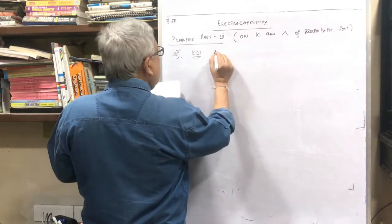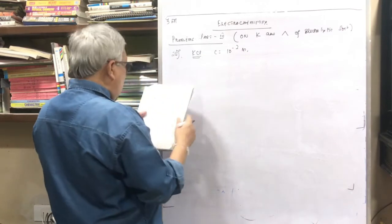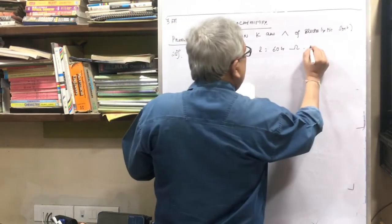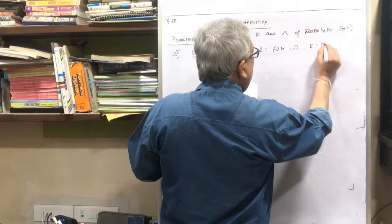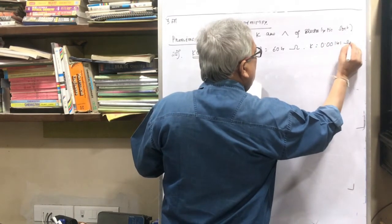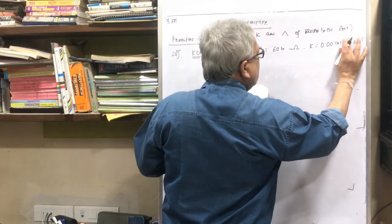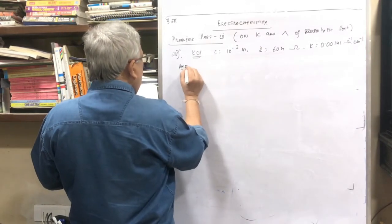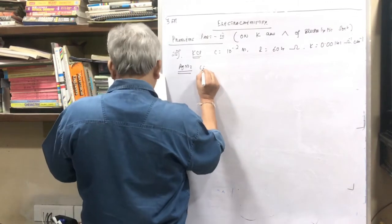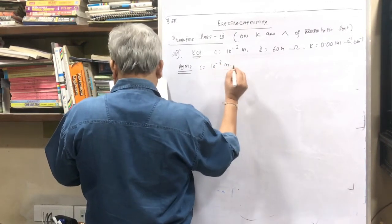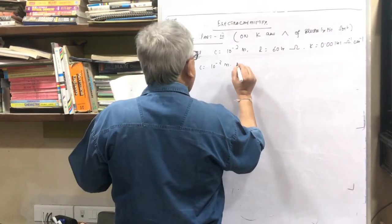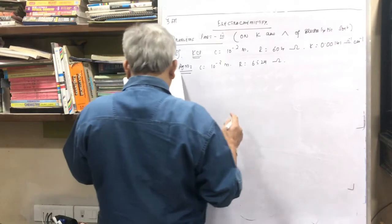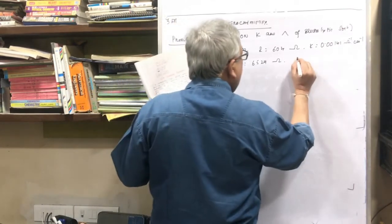For KCl, concentration is 10⁻² molar, R is equal to 604 ohm, and K is equal to 0.00141 ohm inverse centimeter inverse. For AgNO3, concentration is 10⁻³ molar, R is equal to 6529 ohm. They have asked me lambda equals what.